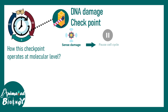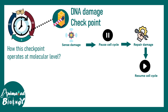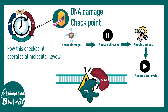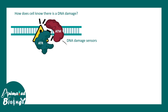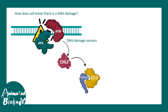Imagine there is DNA damage that has accumulated in G1 phase. If this DNA damage persists, the consequence is detrimental because there could be replication blockage and faulty chromosome segregation. That is why there should be checkpoints which can block the transition of the cell cycle, giving the cell enough time to repair its damage. Let's see how this checkpoint operates at the molecular level.